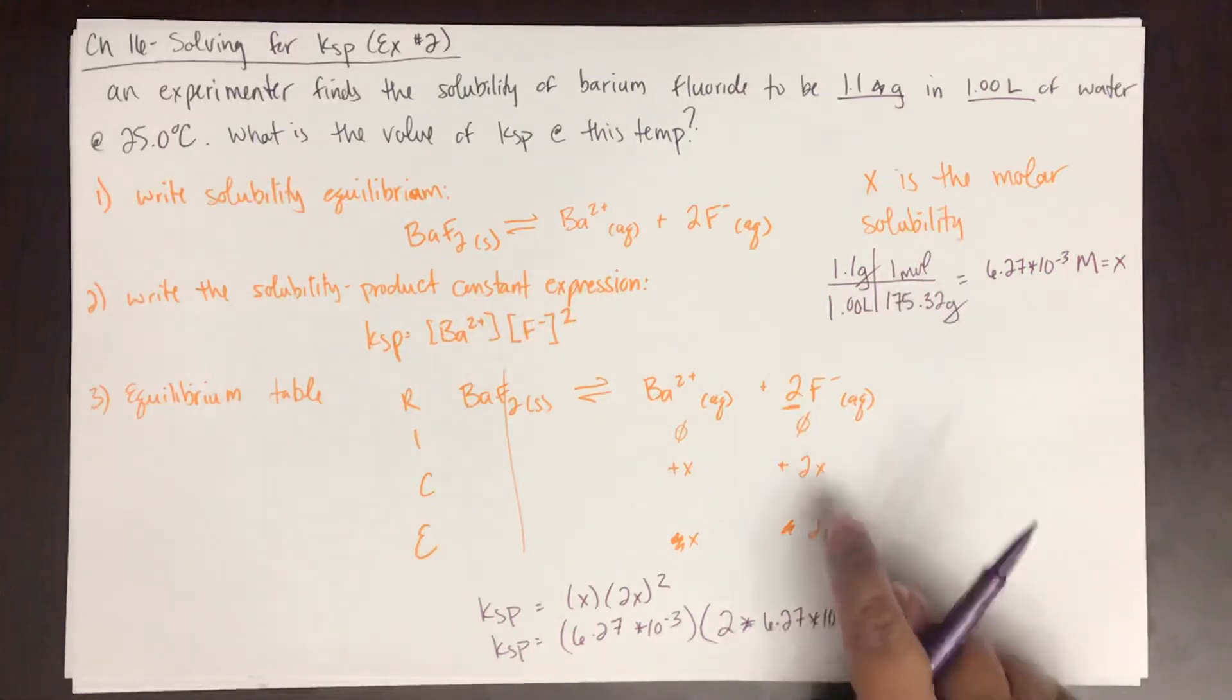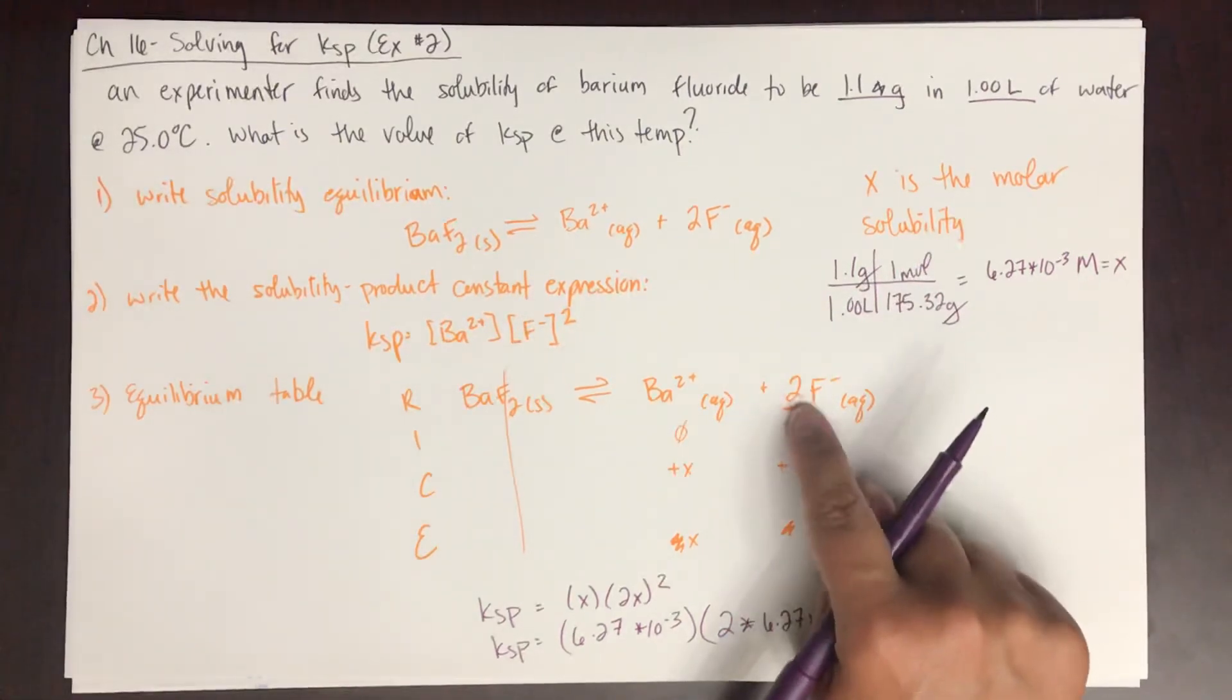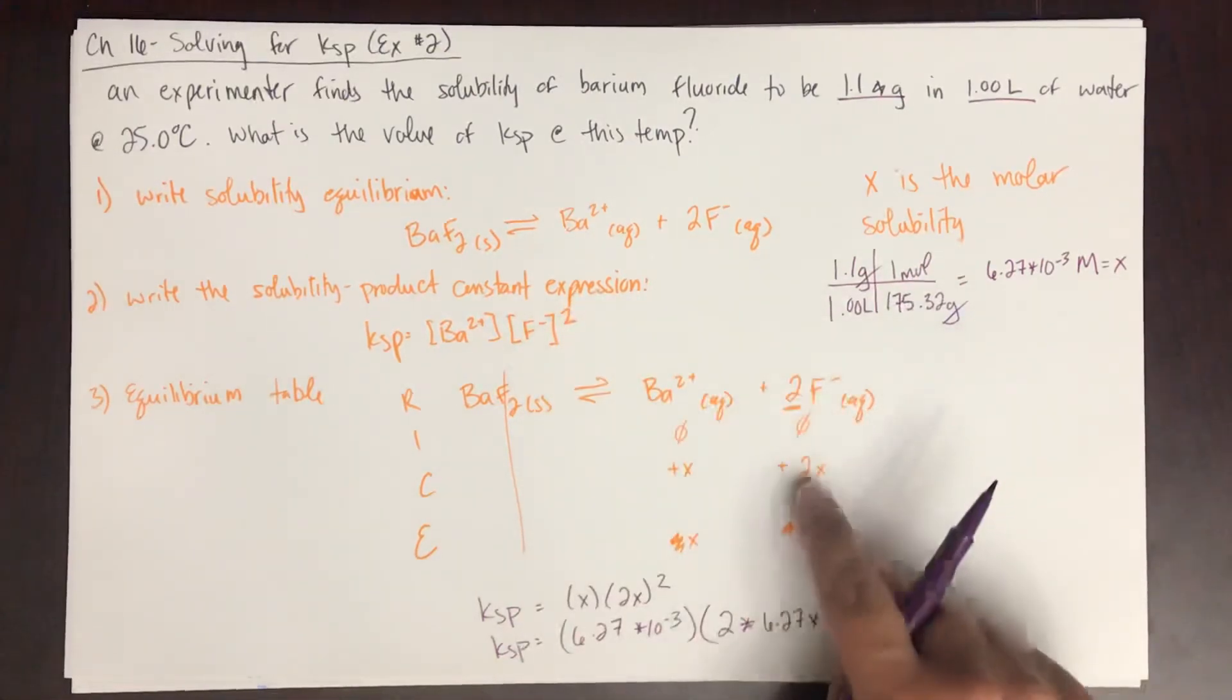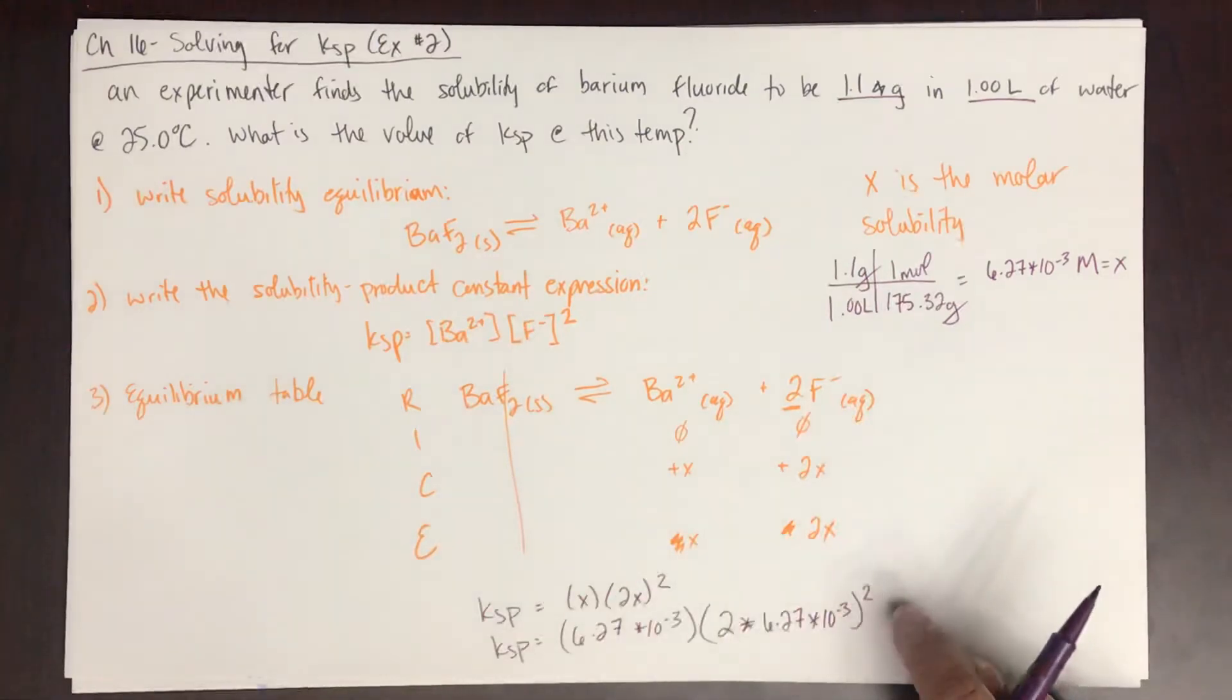Do not forget that this 2 is going to come into play two places, because the coefficient becomes an exponent, but then the coefficient is also the amount that the change is in your equilibrium table. So it's 2X squared. So really it's 2X cubed, 2X times X squared.